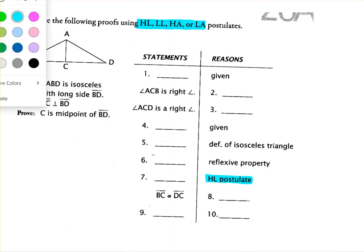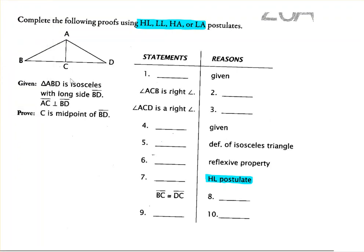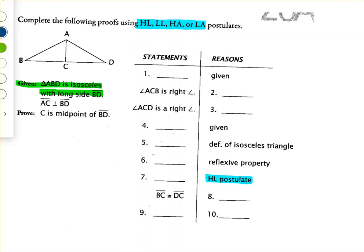That means somewhere in the prior steps it has already been established that we are working with right triangles. As always, we're going to start by looking at our given statements. We are given that triangle ABD is isosceles with long side BD. An isosceles triangle has two congruent sides, so if BD is the long side, it must mean that AB is congruent to AD.